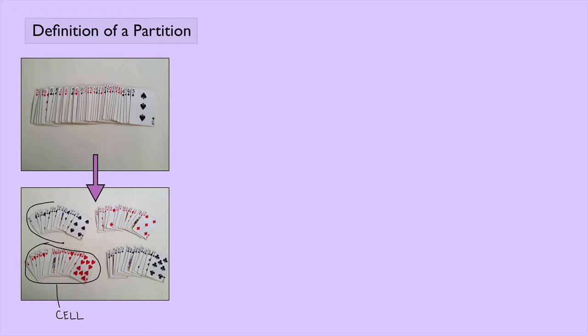And so this, of course, would be a cell, and this would be another cell, and this would be another cell. And so we've taken the set of cards and we've partitioned it into four different cells.